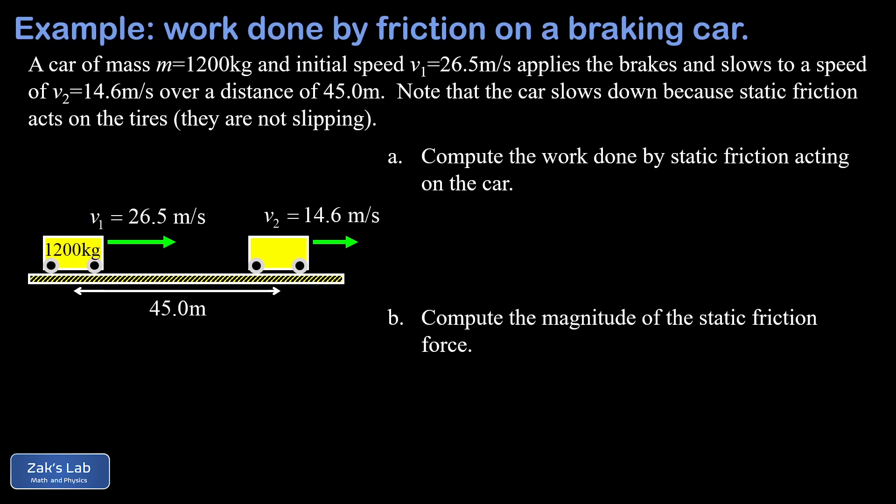The car is slowing down because the road is exerting a force on the tires, and that force points to the left. Even though everything is moving, this is a static friction force. It would only be a kinetic friction force if the tires were actually slipping against the concrete, but we're told these tires are not slipping.